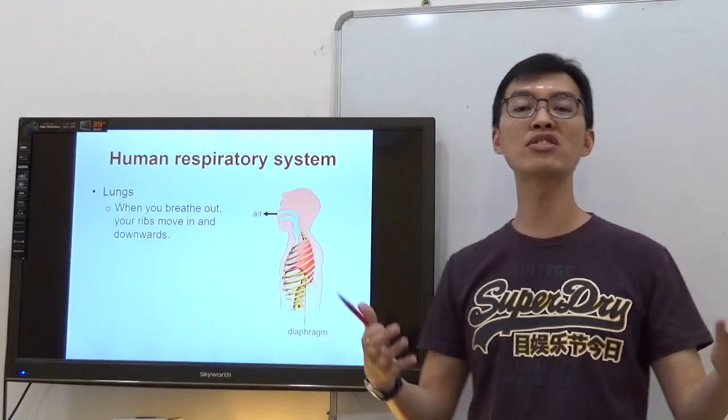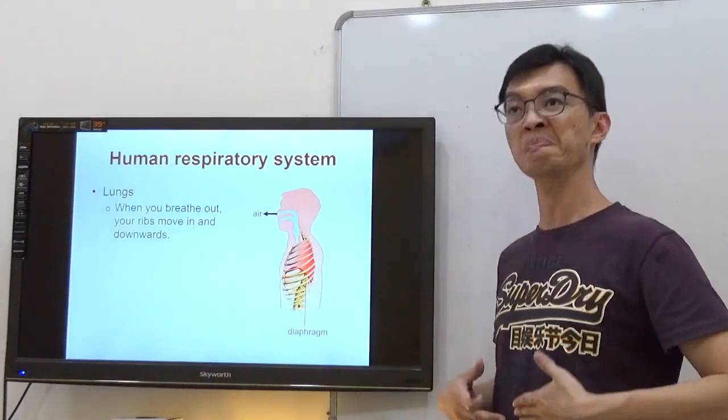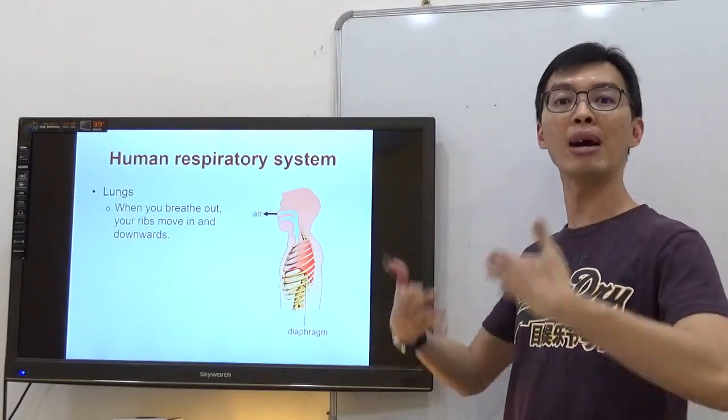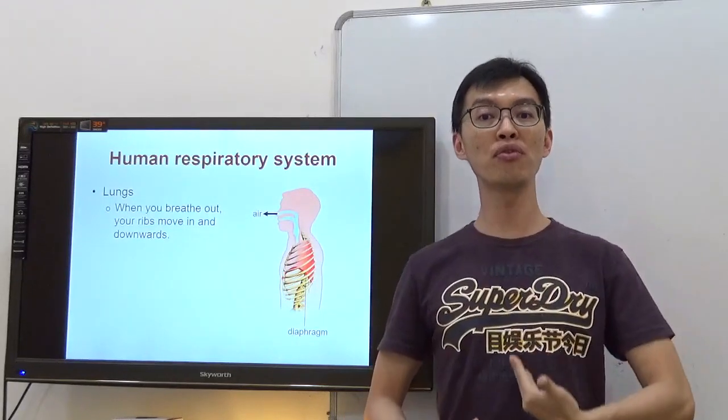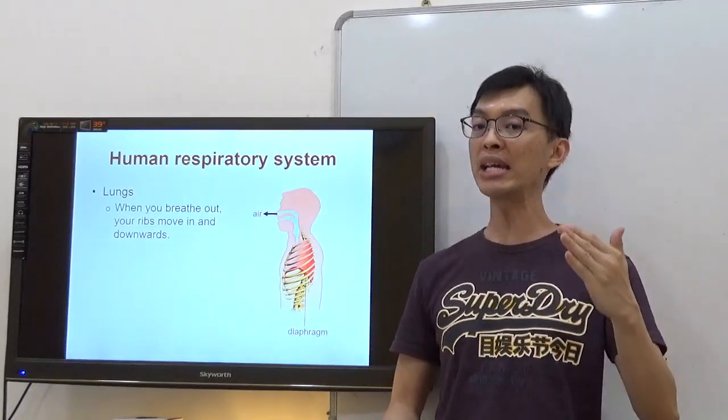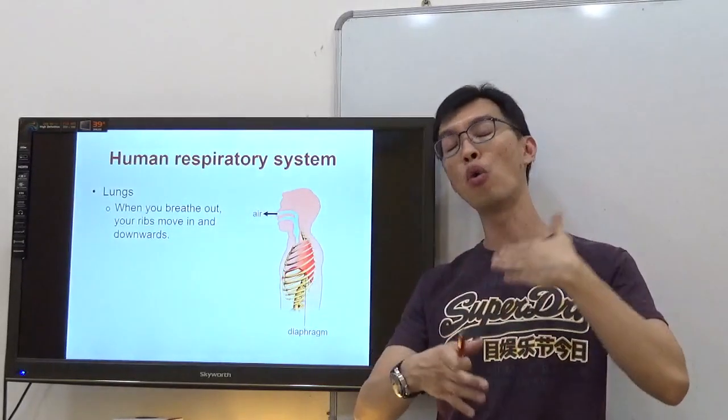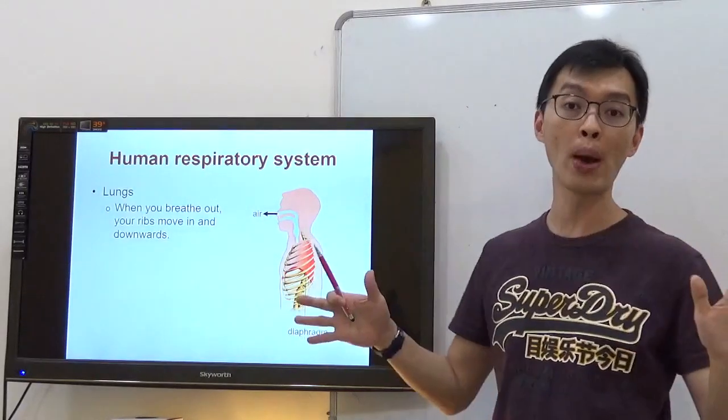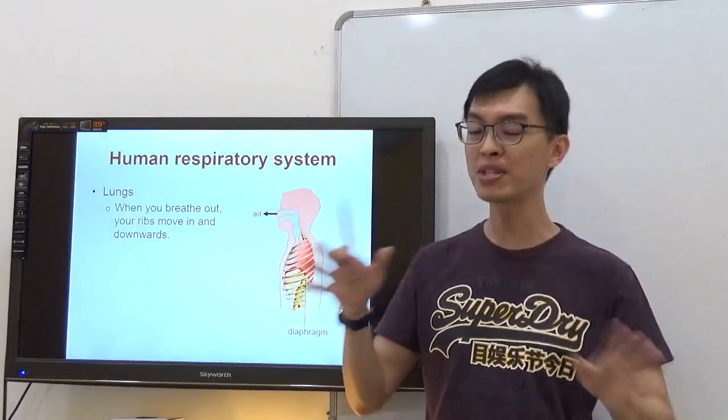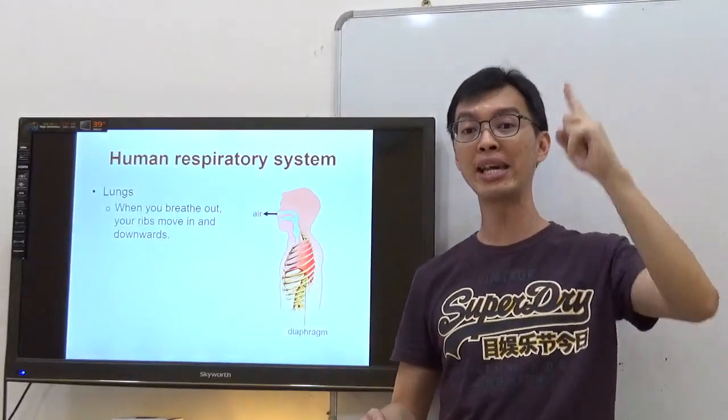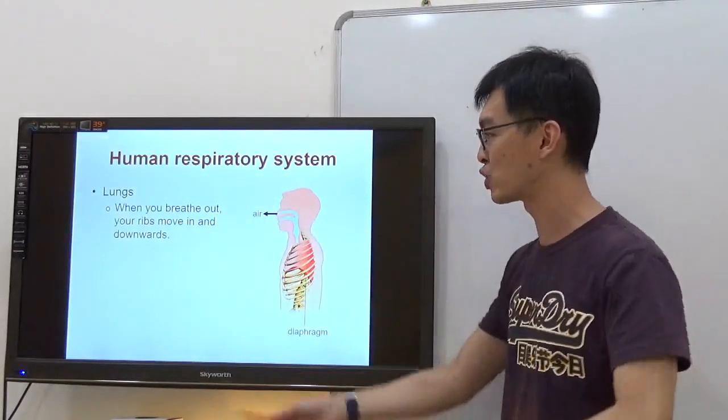When you breathe out, let's talk about breathing out. Just now we talked about breathing in - rib cage moves out and upwards and diaphragm moves downwards. Breathing out is the exact opposite. Don't memorize both sides. Just remember breathing in, you'll know breathing out.